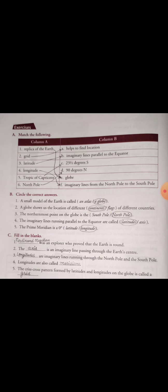Next, fill in the blanks. Blank was an explorer who proved that the earth is round — the answer is Ferdinand Magellan. He went on a tour and returned to the same point from which he had started, proving the earth is not flat but spherical in shape. So Ferdinand Magellan was an explorer who proved the earth is round. The blank is an imaginary line passing through the earth's center — the answer is axis.